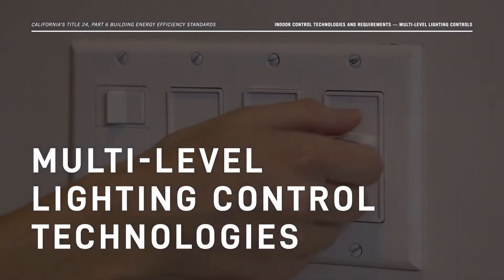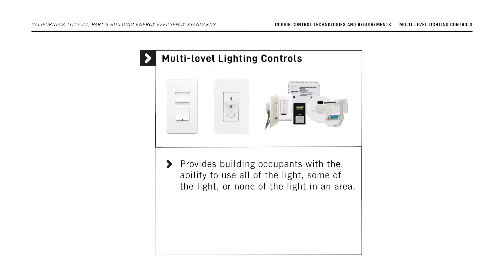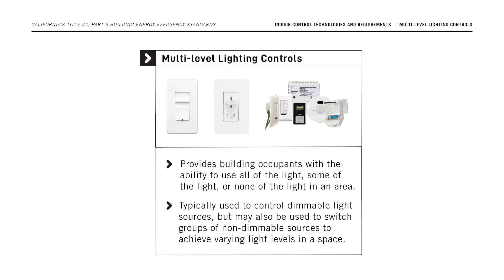What are multi-level lighting controls? Multi-level lighting controls provide building occupants with the ability to use all of the light, some of the light, or none of the light in an area. They're typically used to control dimmable light sources, but in some cases they may be used to switch rows or groups of non-dimmable sources to achieve varying light levels in a space.